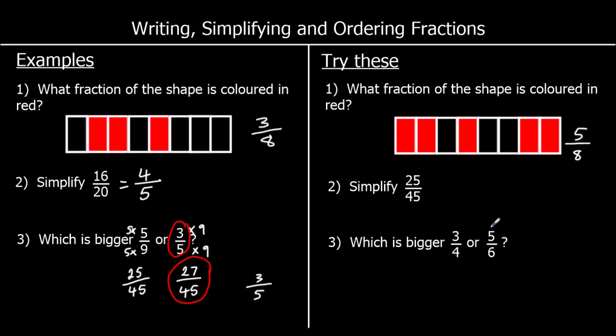Question two: simplify 25 over 45. What times table are 25 and 45 both in? They're both in the five times table. How many fives make 25? That's five. How many fives make 45? That's nine. So 25 over 45 is the same as five ninths.